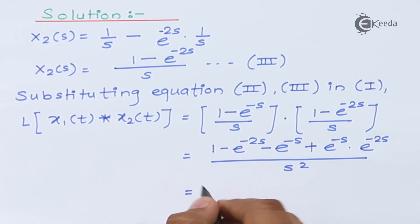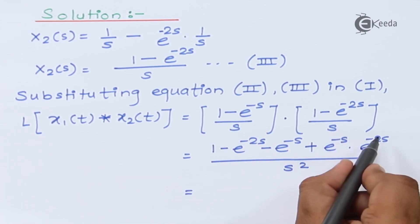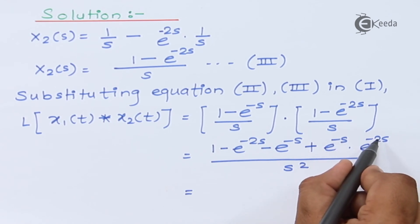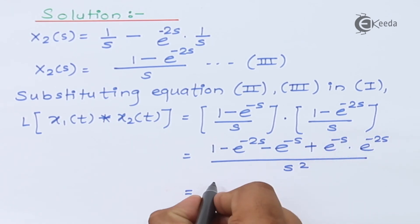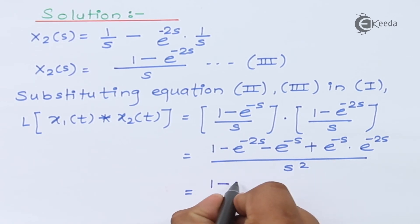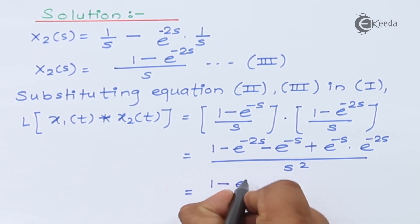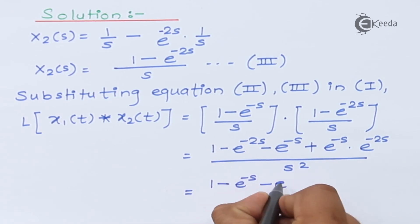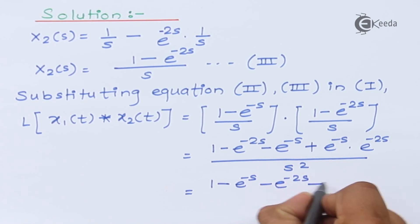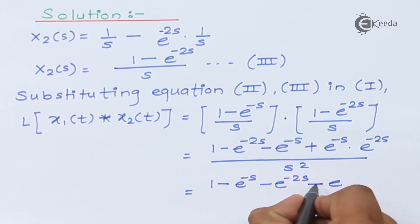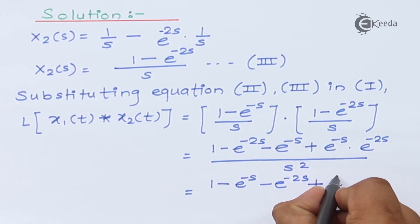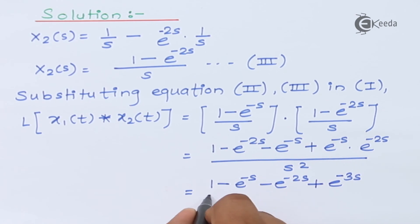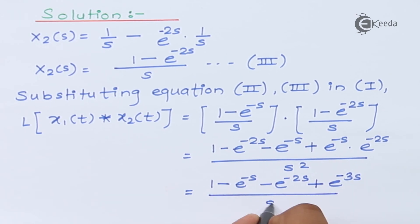When bases are the same, the powers get added. So −s plus −2s becomes −3s. The final result is (1 − e^(−s) − e^(−2s) + e^(−3s)) / s². This is our solution for this question using the convolution theorem.